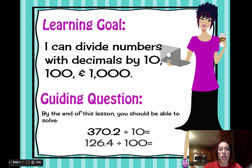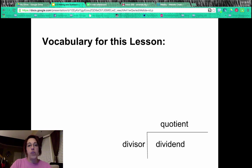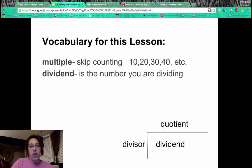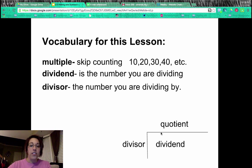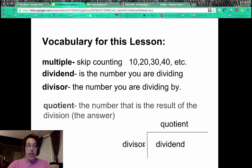So let's flip on over and look at some vocabulary for this video. We start with a multiple. A multiple is like skip counting, like 10, 20, 30, 40, and so on. We have our dividend, that's the number down here that you are dividing. Our divisor, the number you're dividing by. And our quotient, which is the answer or results of the division.